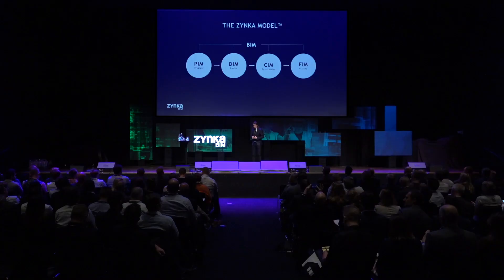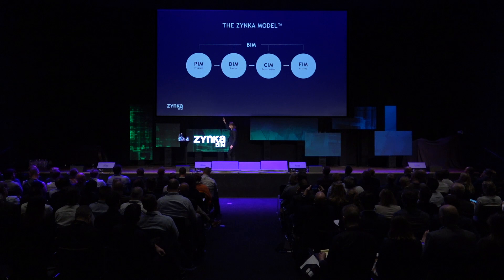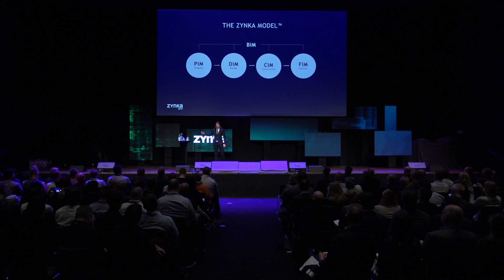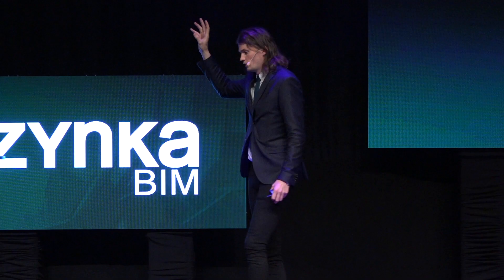I'll briefly explain the model. At the first stage on the left, we have the Program Information Model — the very early stage of building conceptual design. It's all about volumes, areas, numbers, ratios, and making business decisions. We have developed a tool at this stage that is running as a knowledge base right now for 30 billion kronors of investment, so there's a lot of money in that stage.